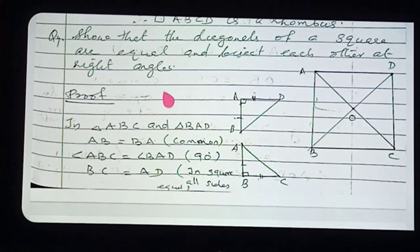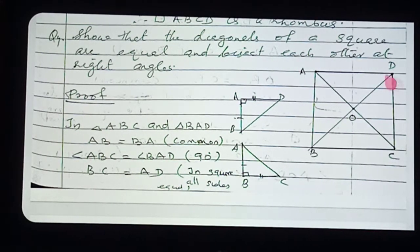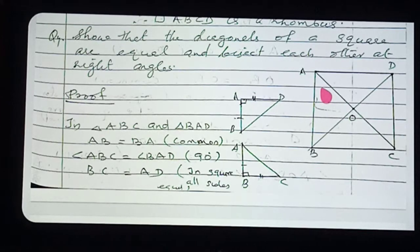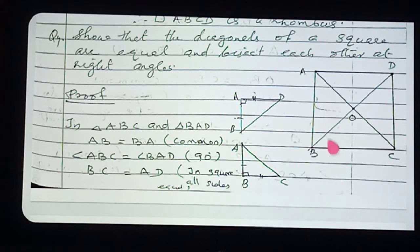ABCD is a square. The meaning is that all sides are equal and all angles are 90 degrees. In a square, all the sides are equal and all angles are 90 degrees each.